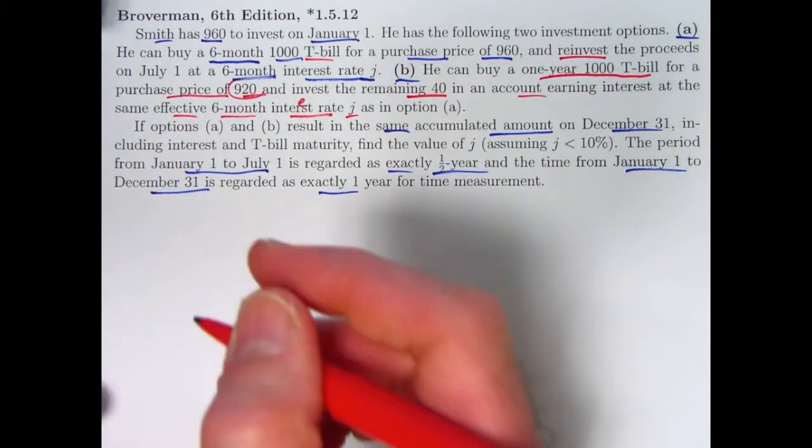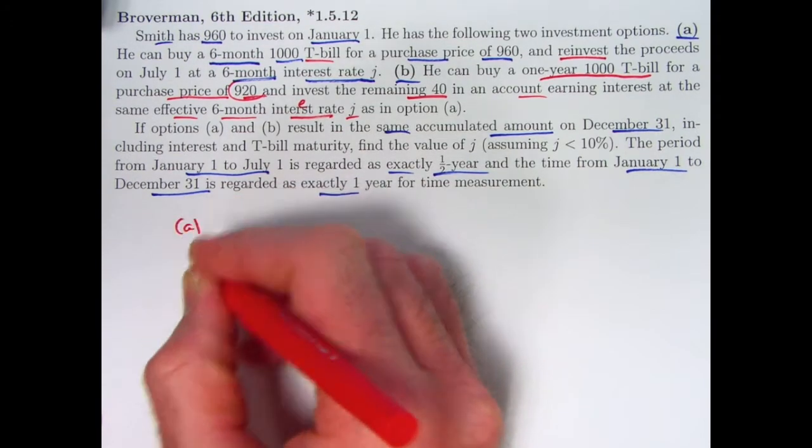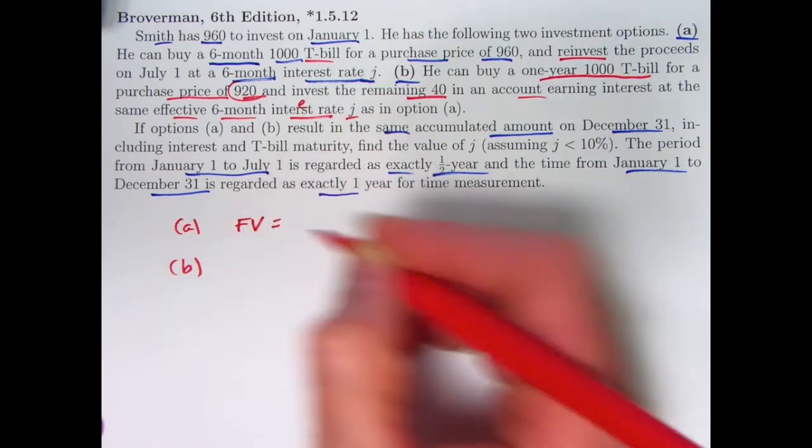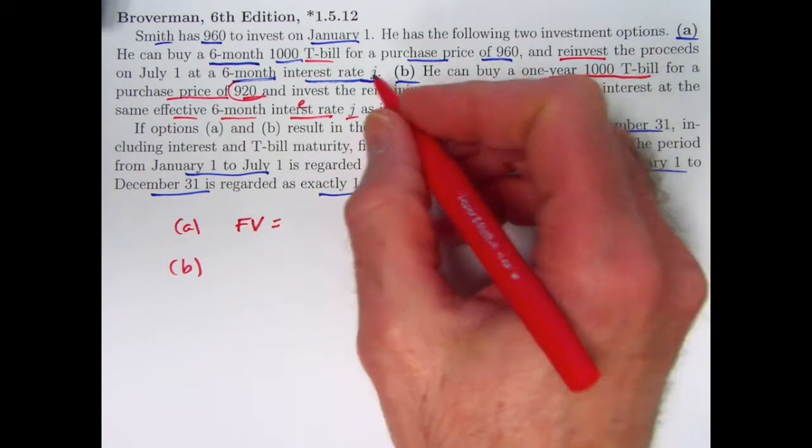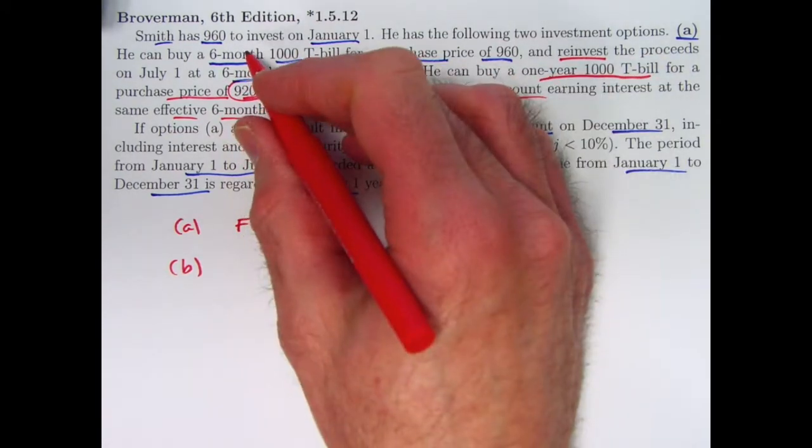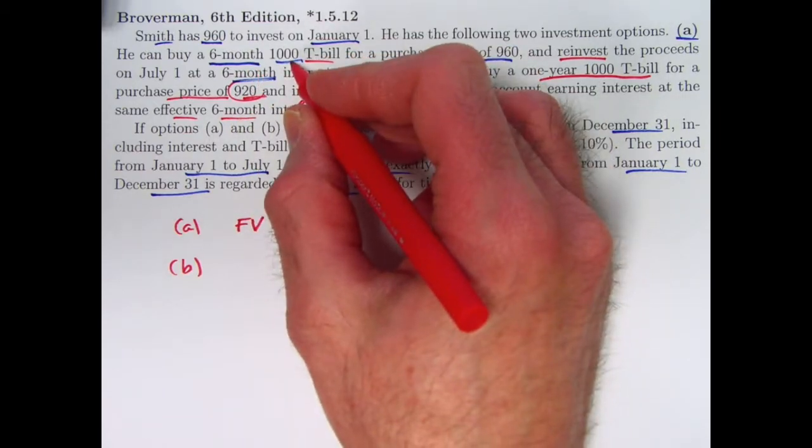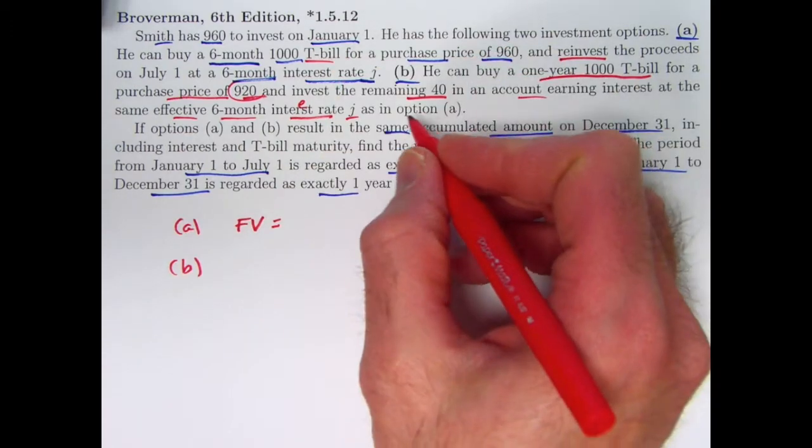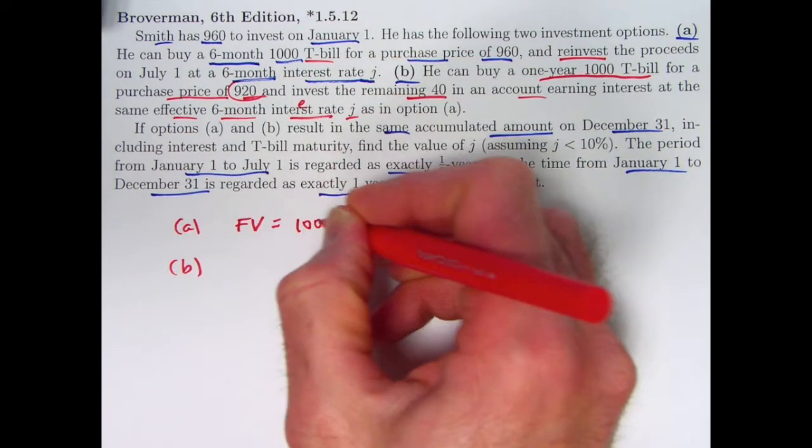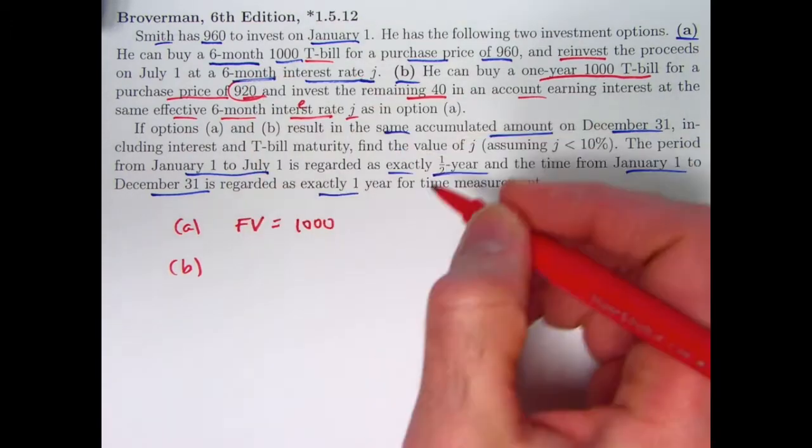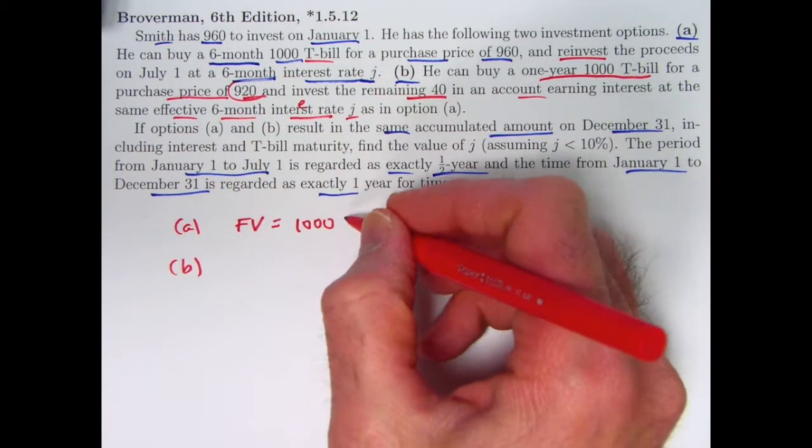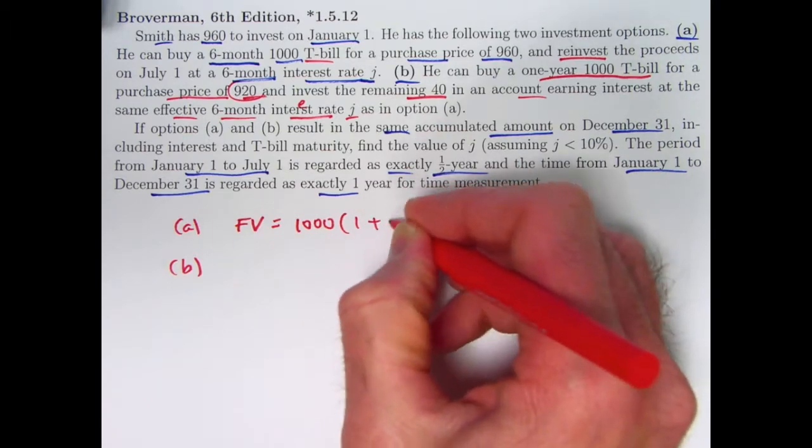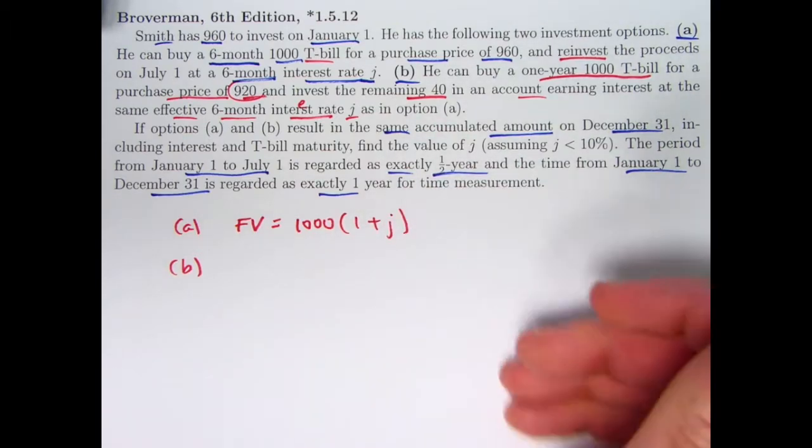All right so how do you solve the problem? Just break it down, stay calm, it's not really that hard. Option A, what's the future value going to be? Well the initial investment is 960, it does grow to a thousand after six months on July 1st, and then by December 31st that thousand was invested again in this other account earning a six-month interest rate of J, so it needs to be multiplied by the growth factor one plus J for one period which is six months.